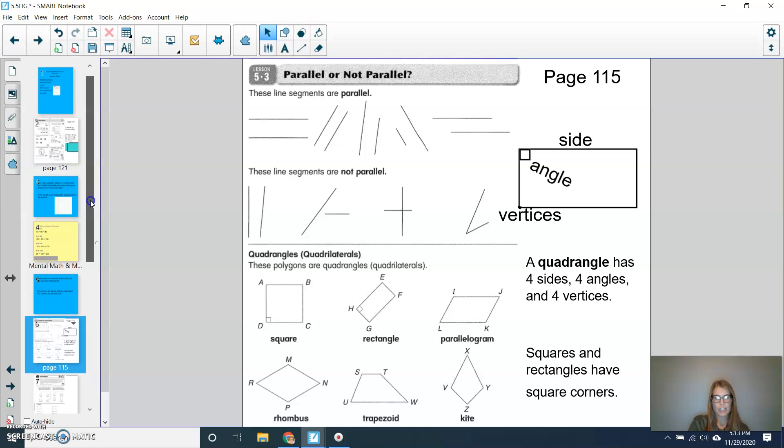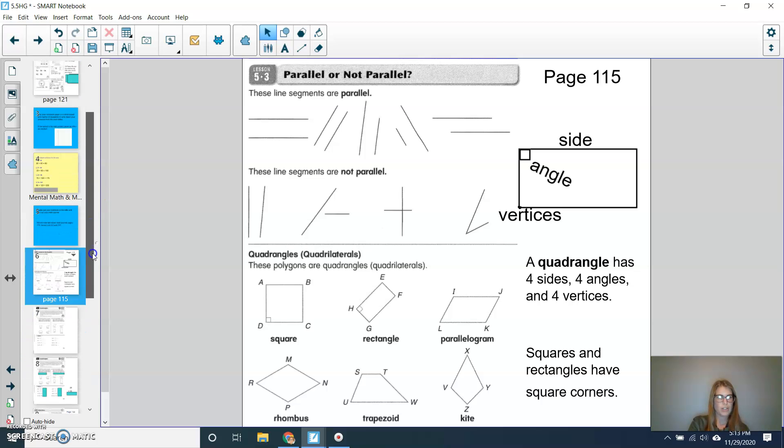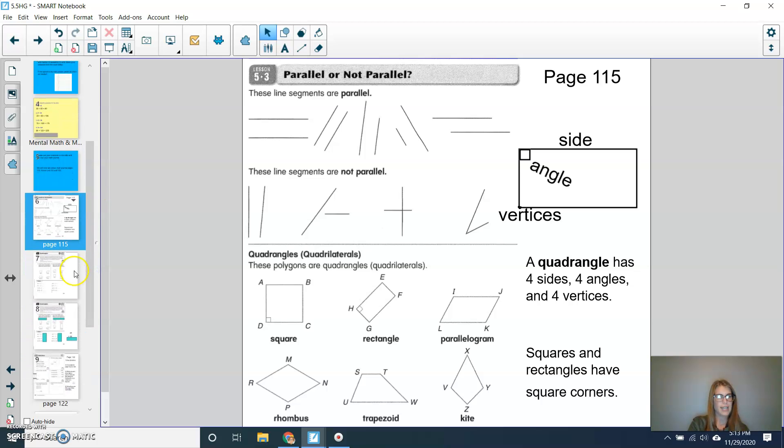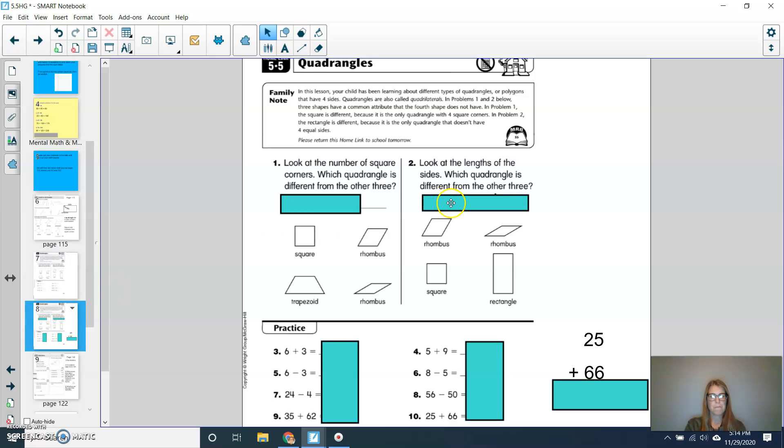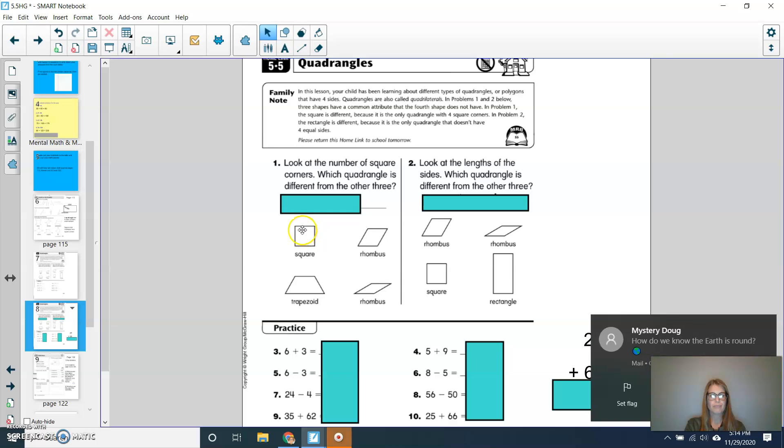So now let's use what we know about quadrangles. And let's take a look at that 5.5 homelink that looks like this. So for numbers one and two, let's talk about those ones together. And then the bottom part, I'll have you practice on your own. But we'll look at numbers one and two first. So look at the number of square corners.